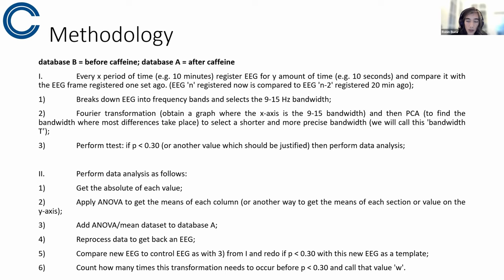Then it would perform that analysis, which should include getting the absolute value of each value to avoid the means being equal to zero, for example, then it should apply ANOVA to get the means of each column, the means between the caffeinated EEG and the control one. So it would come up with means of each value there. And then it would add these mean values to the database A, which is the after caffeine to get something that more resembles the database B.